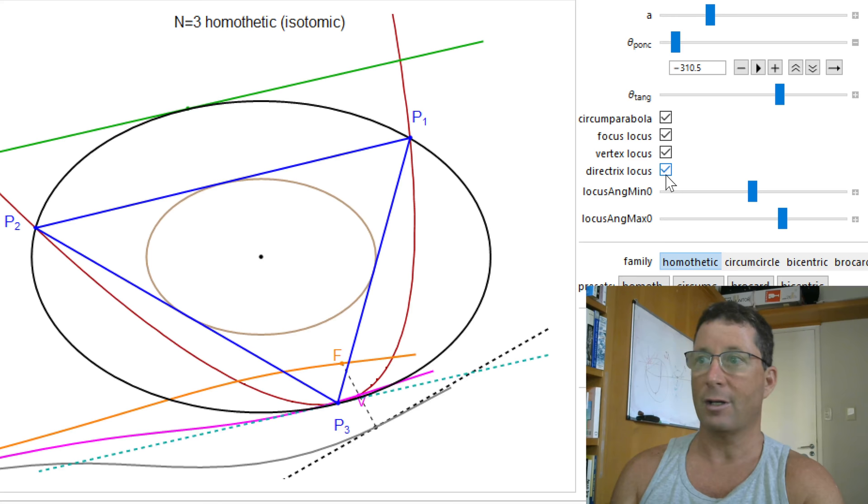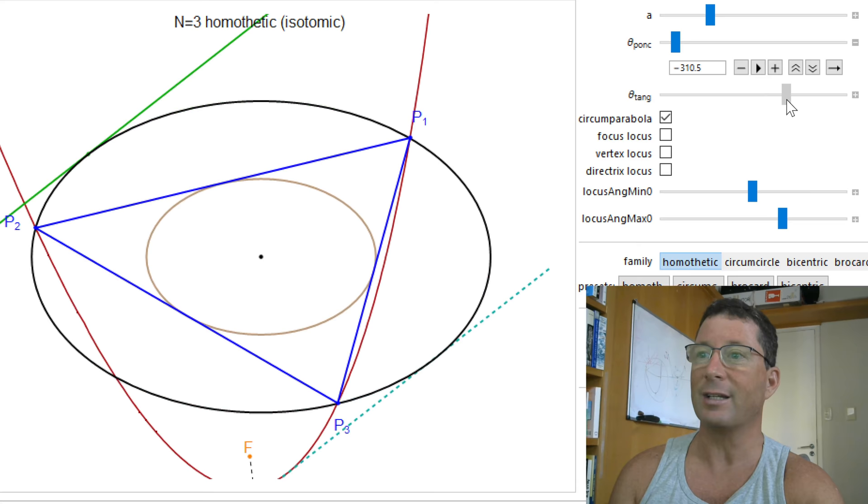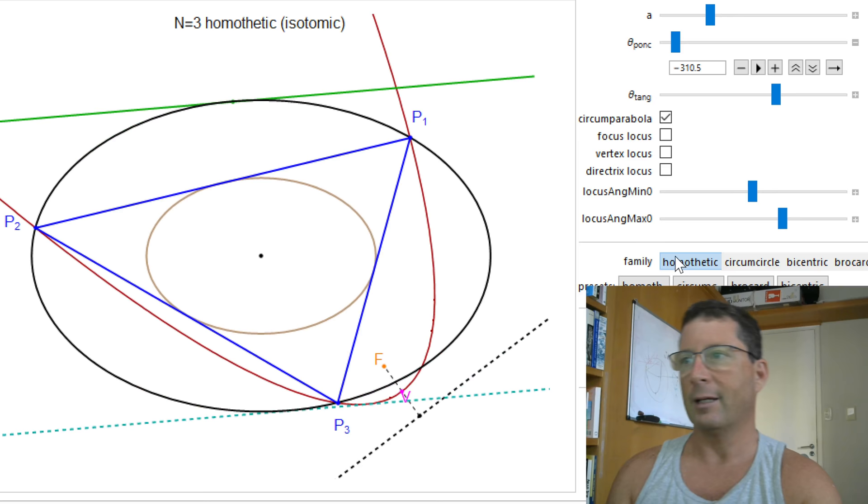One of them is what is the locus of the focus... What is the locus of F as I change the tangent? So if I do this, what's happening to that focus? You can visually see here that it's actually doing an interesting curve. And we don't know what this is, if this is a simple curve, if it's degree 2 or higher, but this hasn't been studied yet. Another thing that hasn't been studied is what